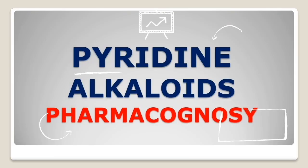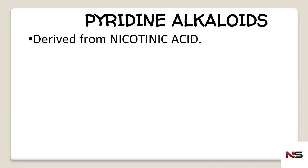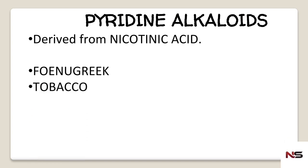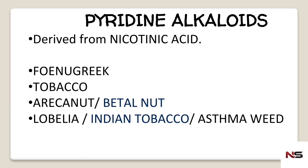Welcome to another video of NS Pharma. Today we are going to see pyridine alkaloids from pharmacognosy. Pyridine alkaloids are derived from nicotinic acid. The drugs coming under pyridine alkaloids are fenugreek, tobacco, arachanate, and lobelia.